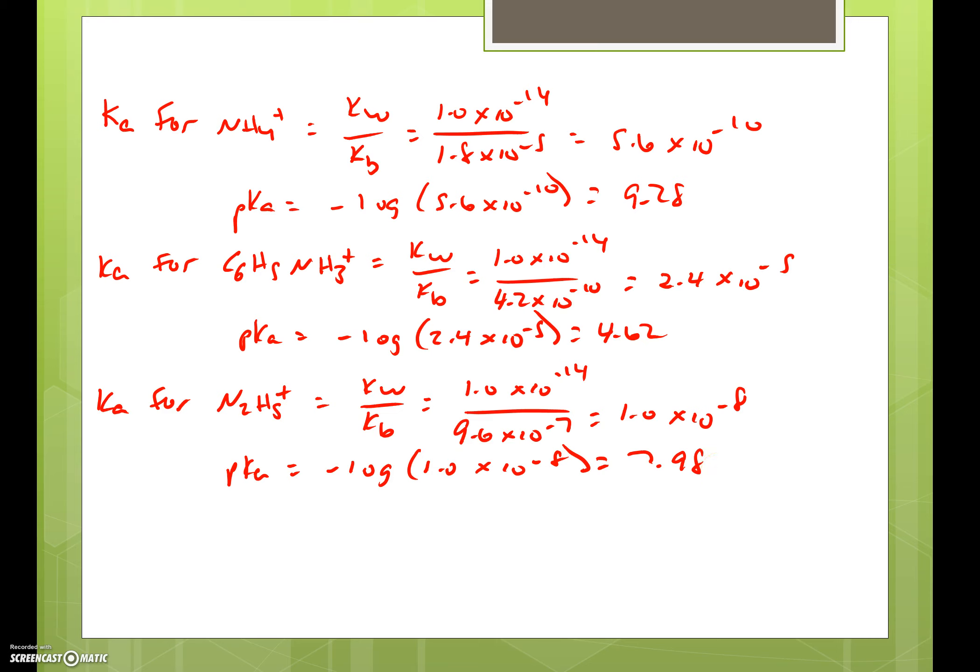Now, if we compare those, we want to make a buffered solution with a pH of 10.07. Again, the pKa of the buffer should be as close as possible to the desired pH of the solution. Our options are 9.28, 4.62, and 7.98. When we look at those, we see that the pKa value for ammonia is the closest to the desired pH, so ammonia would be our best choice.